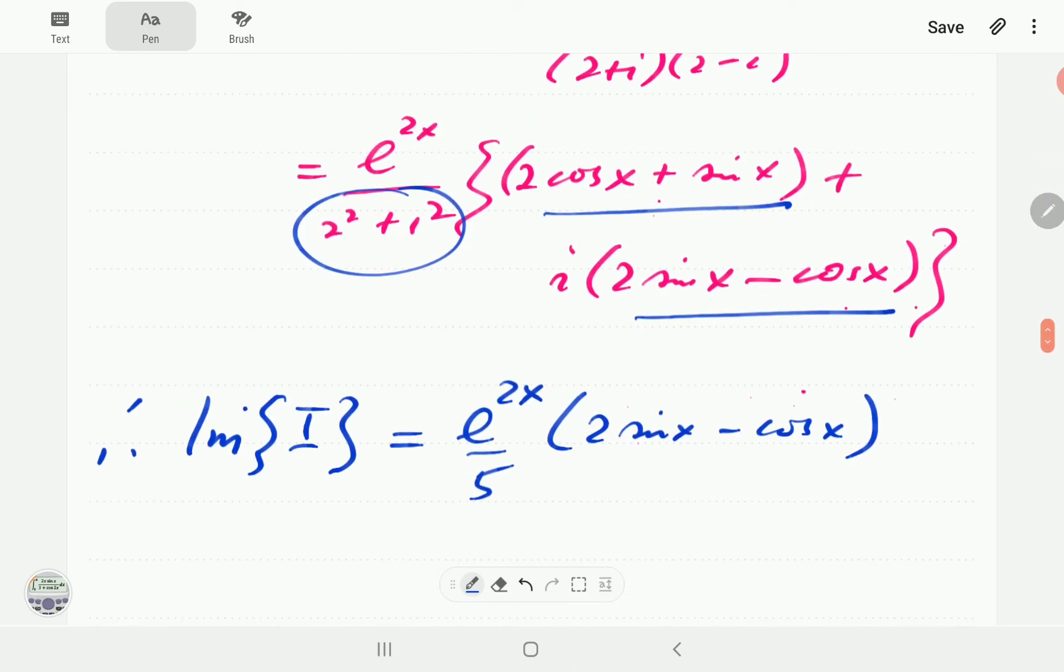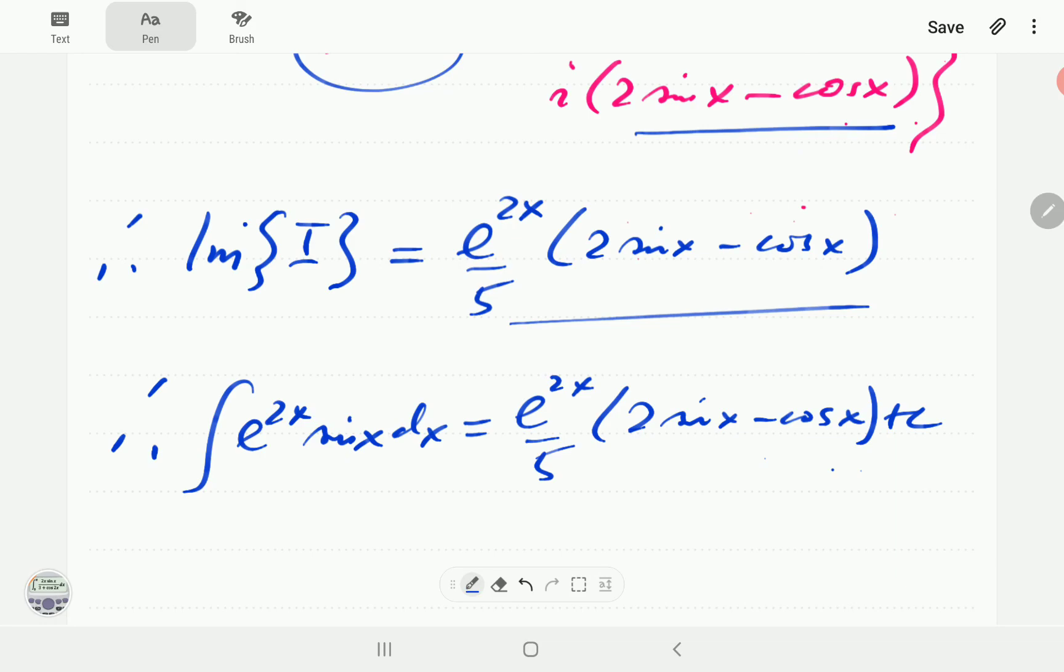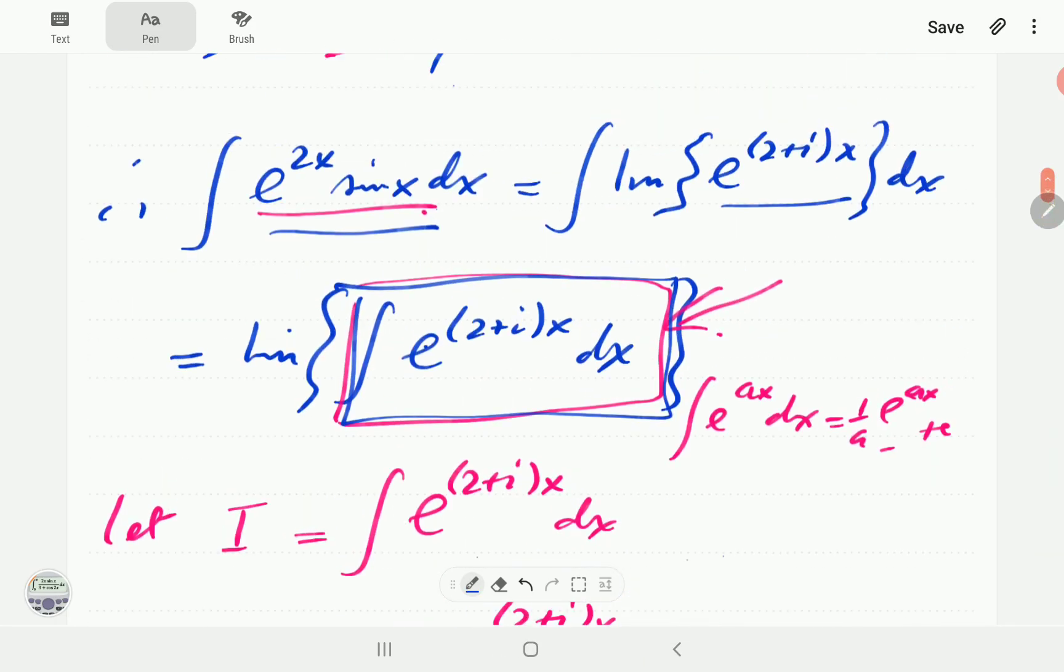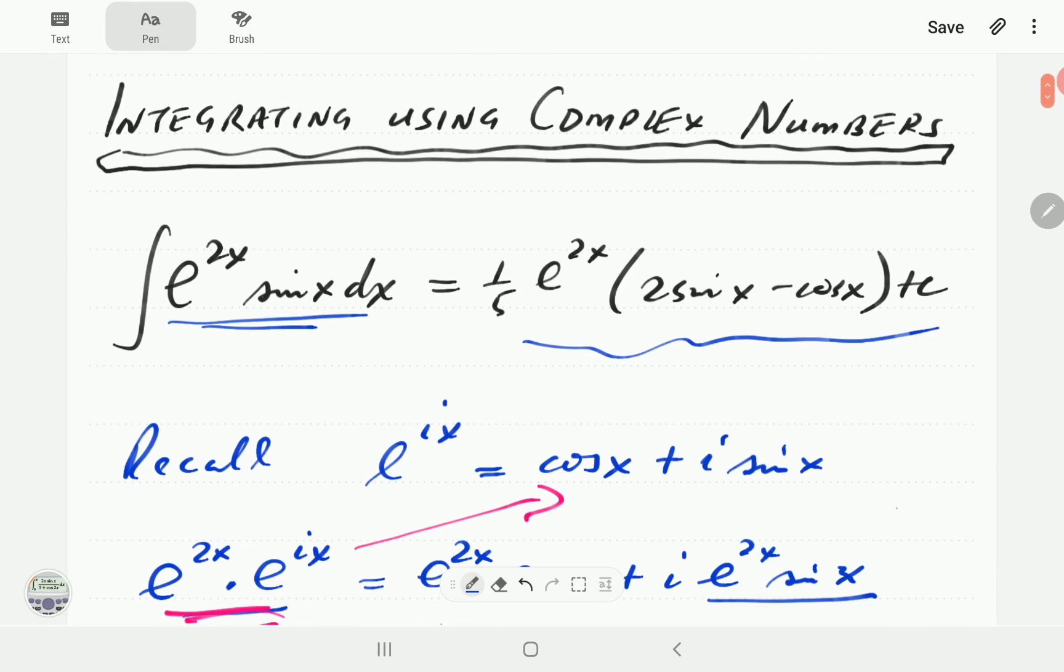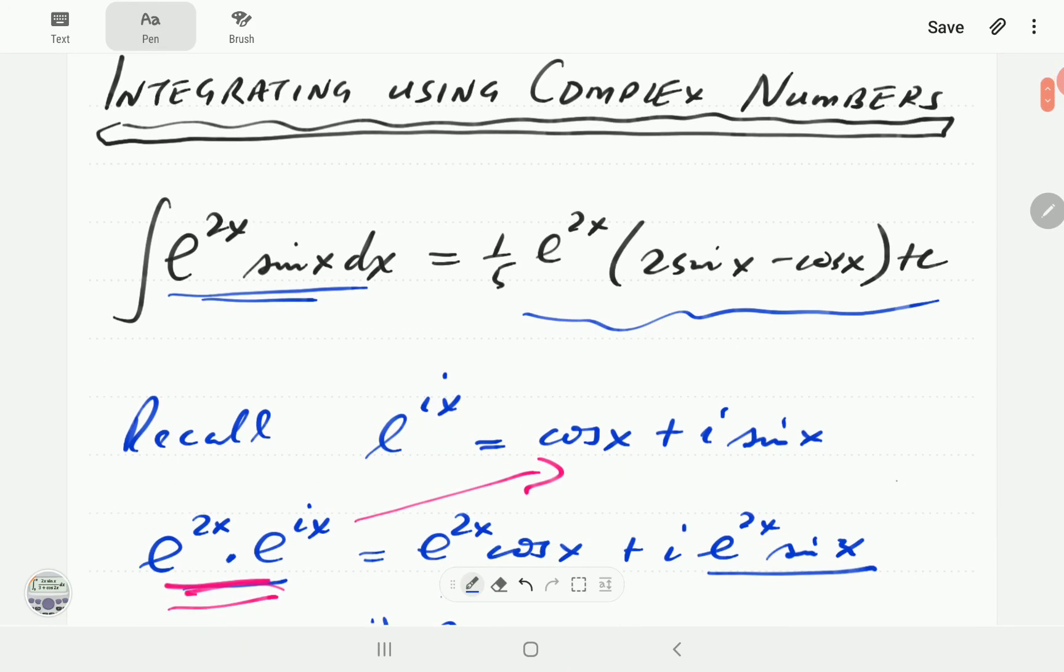So therefore, we have now the integral of e to the 2x sin x dx is actually this thing plus c. So that's going to be e to the 2x over 5, 2 sin x minus cos x plus c, which is exactly the same as the one we had found by integrating by parts twice and inverting.